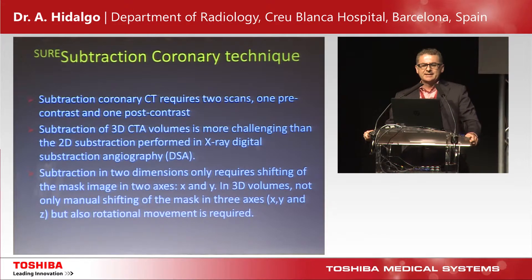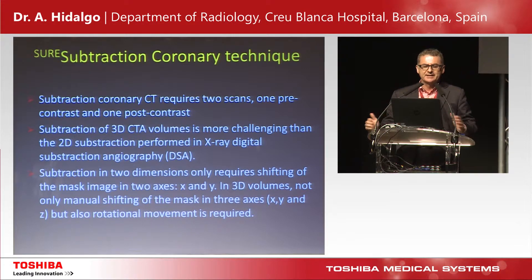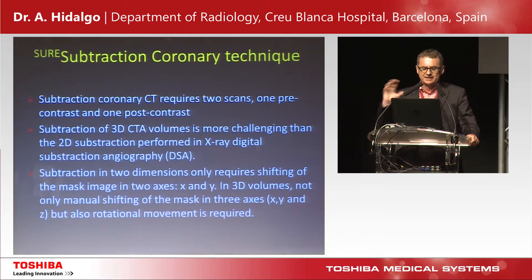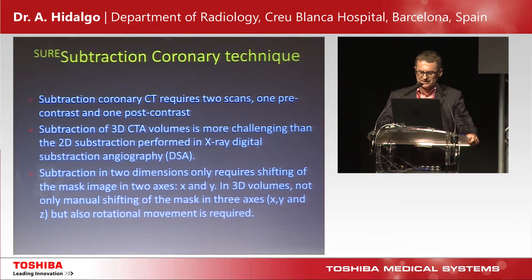The coronary subtraction technique requires two scans: one pre-contrast and another post-contrast. The subtraction is quite challenging because it is not like the subtraction performed in digital subtraction angiography, where you have just two dimensions. Here we have three dimensions and the heart is beating along three axes, so the technique must account for all this movement.